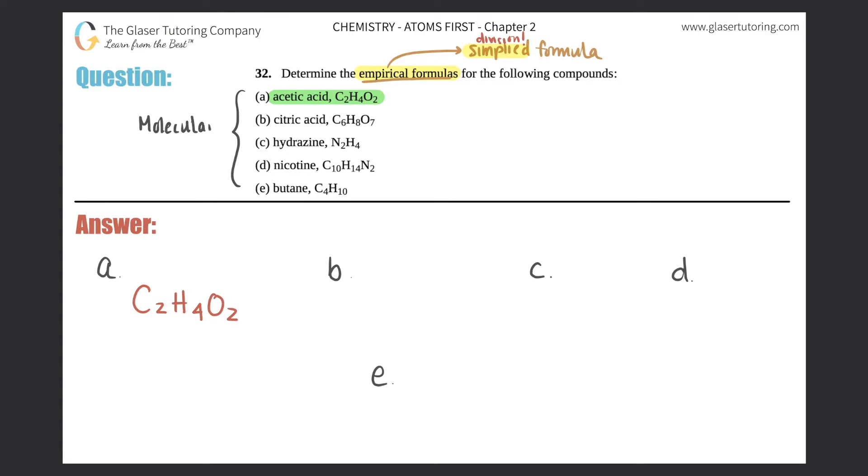They're the formulas that are given, and any formula that is given is classified as a molecular formula. However, if you can simplify a given formula, you will turn your molecular formula into an empirical formula.